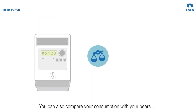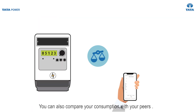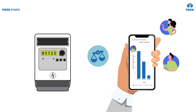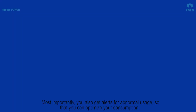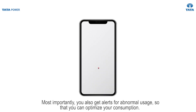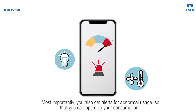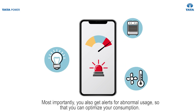You can also compare your consumption with your peers or neighbours. Most importantly, you also get alerts for abnormal usage so that you can optimise your consumption.